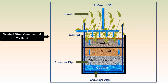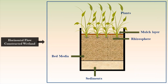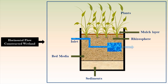Wastewater drains out from the bottom in vertical flow constructed wetlands. They need lesser area — one to three square meters per population equivalent — and are efficient in nitrification. In the horizontal flow constructed wetland, the wastewater flows from the inlet of the bed.